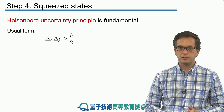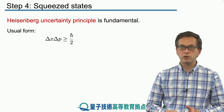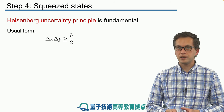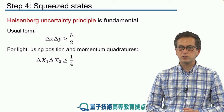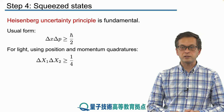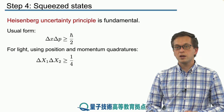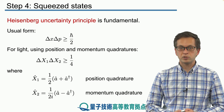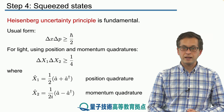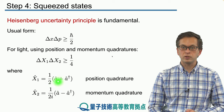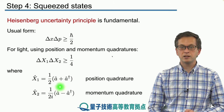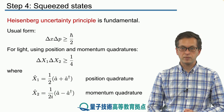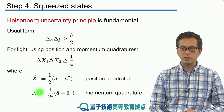The product of delta x and delta p have to be larger or equal to h-bar over 2. We have been using the Heisenberg uncertainty principle in a slightly different form by using the position and momentum quadratures. Delta x1 times delta x2 is larger or equal to 1 over 4, where the quadrature operators are given by: x1 is equal to 1/2 times (a plus a-dagger), while x2 is given by 1 over 2i times (a minus a-dagger). This is the position quadrature and this is the momentum quadrature.